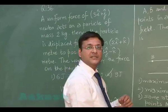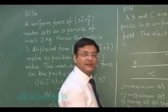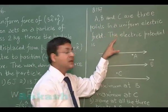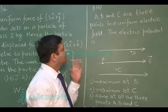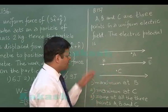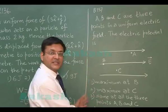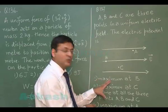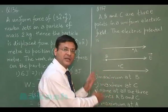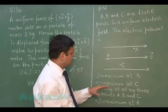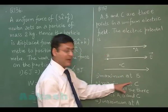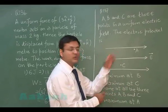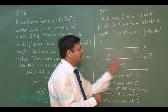Moving to question 137: a, b, and c are three points in a uniform electric field. You have to find out which point is at maximum potential. The options guide you — maximum at B, maximum at C, maximum at A, or same at all points. You have to think about what is happening to the potential as you move along the electric field.